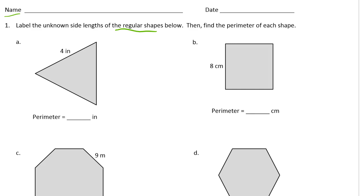But we have to label them anyway and then write down what the perimeter is of each shape. So here's this equilateral triangle. If this side here is 4 inches and this side here also 4 inches and this one's 4.